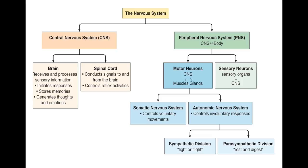Inside the peripheral nervous system there are two different groups of neurons: motor or efferent neurons and sensory or afferent neurons. Remember the acronym SAME — Sensory Afferent, Motor Efferent. Sensory neurons bring signals from our periphery to our central nervous system, and motor or efferent neurons send messages to our muscles and glands in order to react upon that information.